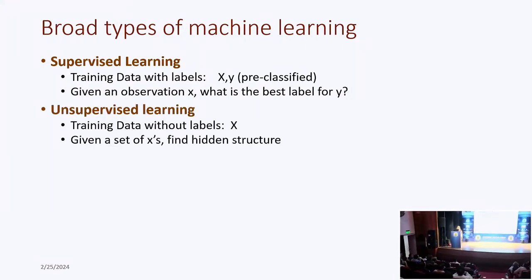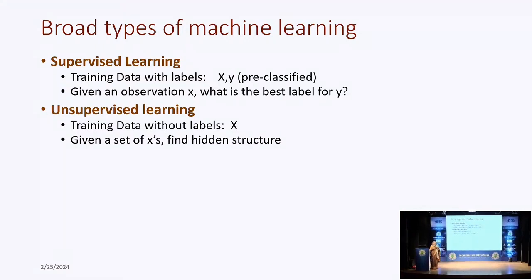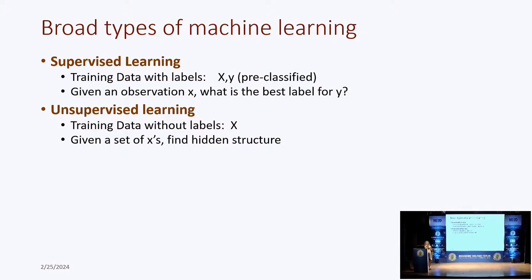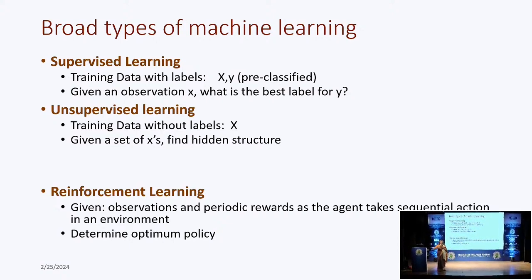Then we have unsupervised learning, where you have a lot of data but you do not have any labels. One common type of unsupervised learning is clustering. There are other types of unsupervised learning which try to form a model of the data. The third paradigm, which is also very useful, is reinforcement learning, which is especially useful when you have a continuous system interacting with the environment. It's not just at one point that you decide the output, but you have to take sequential actions to decide the optimum policy.